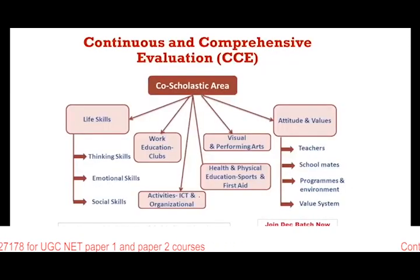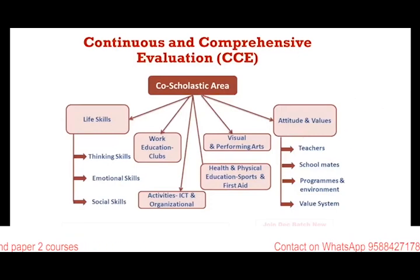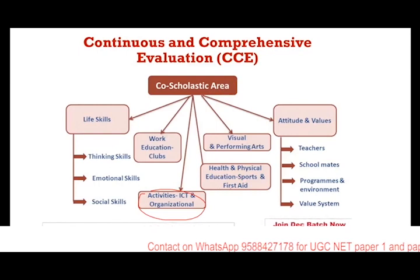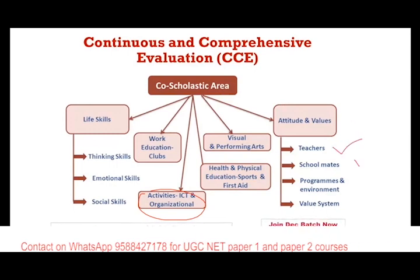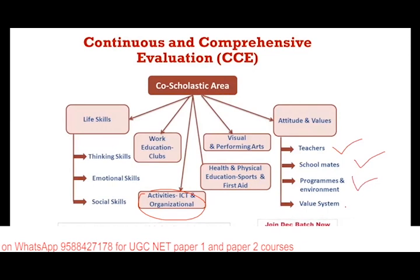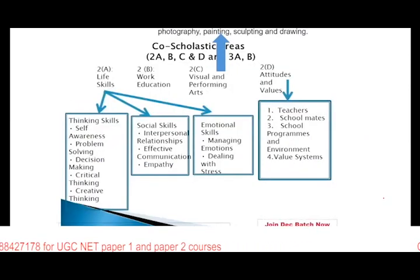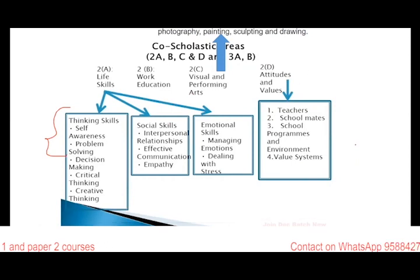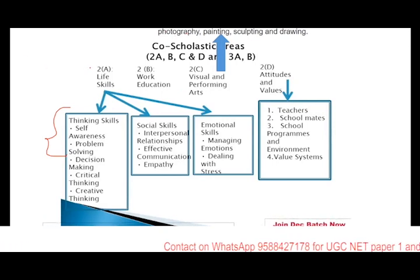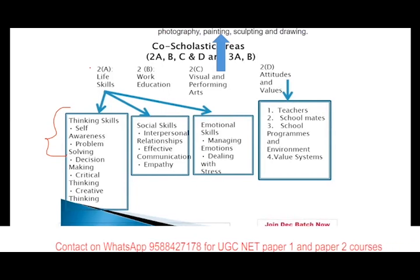Co-scholastic areas include life skills — thinking, emotional, and social; work education; ICT; visual arts; health and physical education including sports and first aid; and attitudes and values with respect to teacher, classmates, programs, environment, and value system. Examples: for life skills — thinking skills, social skills, and emotional skills; visual and performing arts — photography, painting, and sculpting. If you get various examples, you should be able to identify and write which co-scholastic area they belong to.